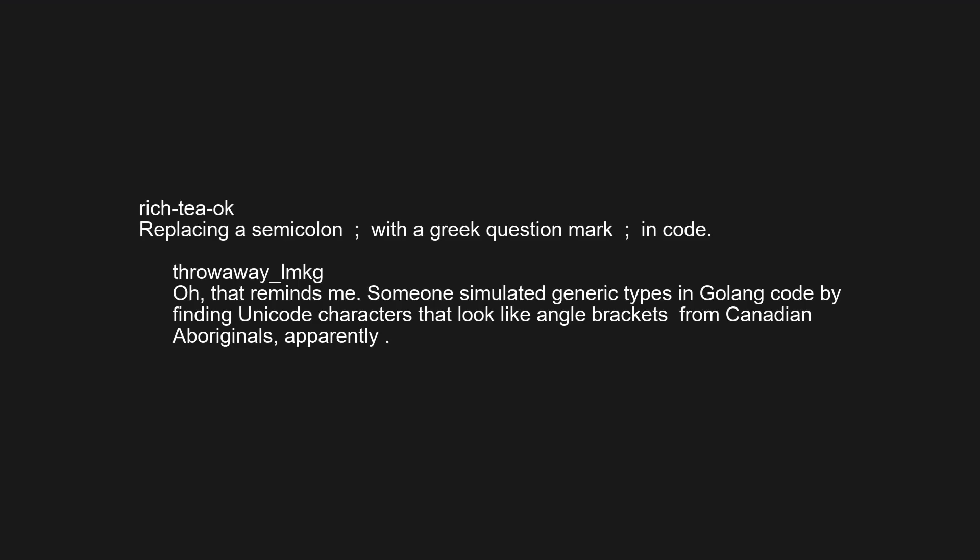That reminds me — someone simulated generic types in Garland code by finding Unicode characters that look like angle brackets from Canadian aboriginal scripts, apparently.